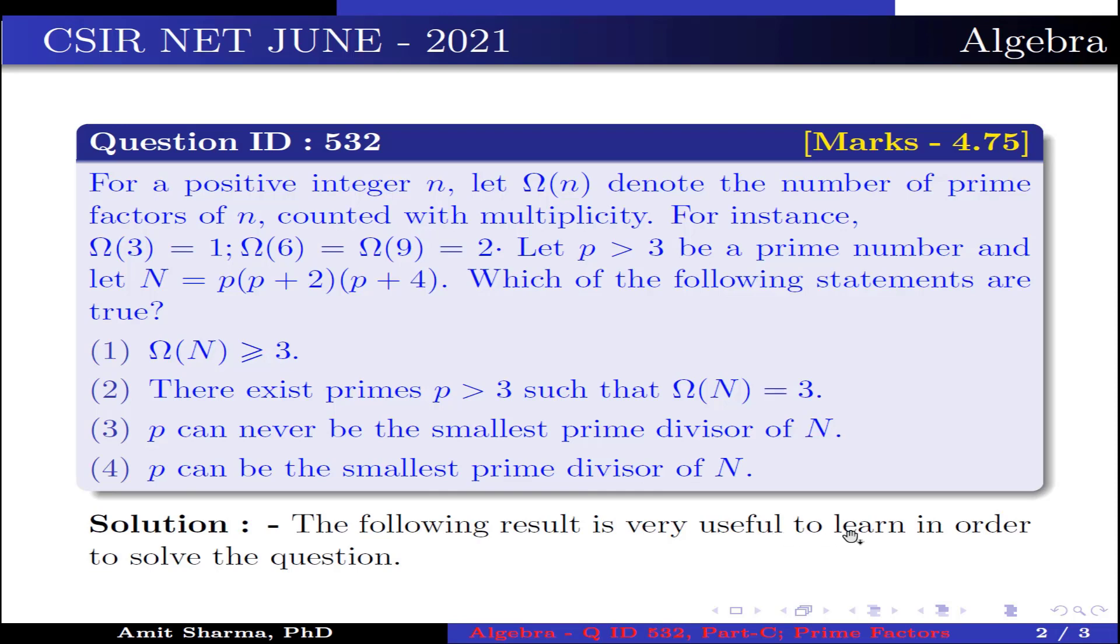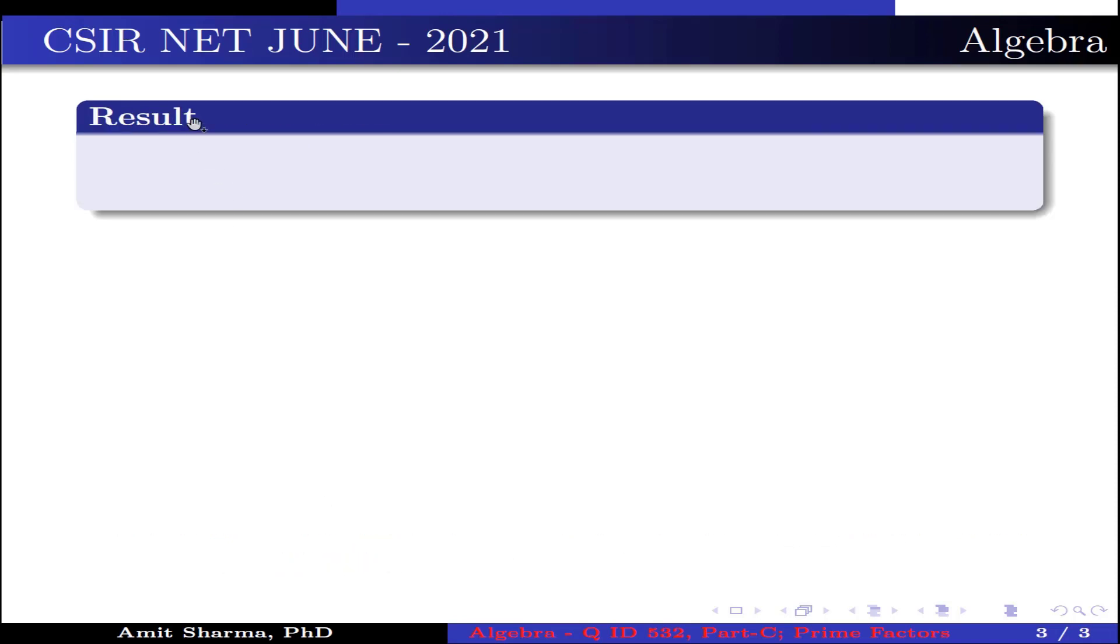The following result is very useful to learn in order to solve the question. Result: The triplet (p, p+2, p+4) such that all three numbers are prime is (3, 5, 7) only.